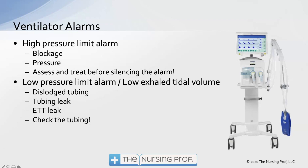The first alarm is the high pressure limit alarm. This can occur if there's some kind of blockage — maybe the tubing is kinked or there's a blockage in the endotracheal tube. Always assess and treat the patient before silencing the alarm. If you work in an area with lots of ventilators, the alarm often goes off because the patient coughs or repositions, and we get in the habit of just hitting silence. Always look at that patient first.